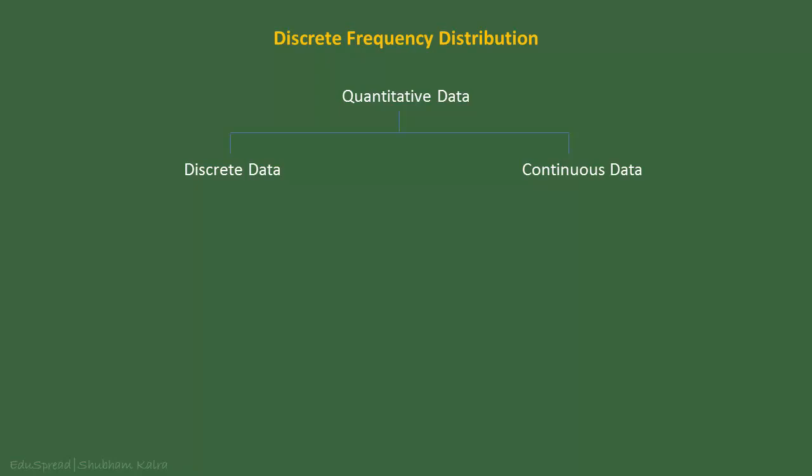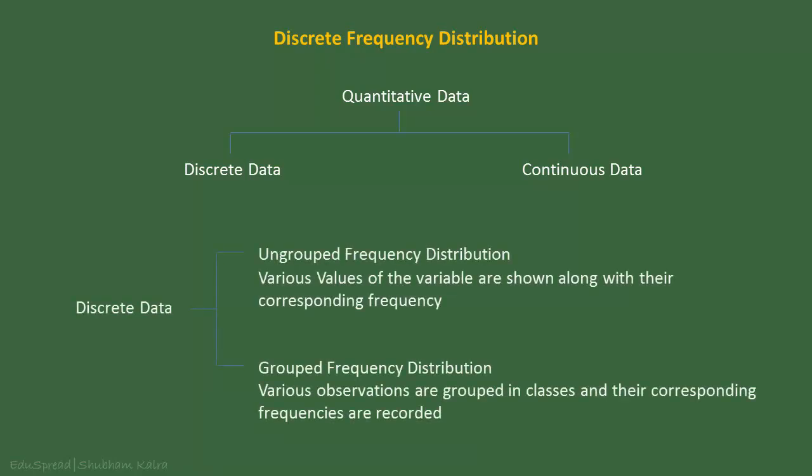As discussed earlier, quantitative data can be of two types: discrete and continuous. In this lecture, we will talk about discrete data and we will see how we can use frequency distribution to present discrete data. There are two types of frequency distribution that we can use to present discrete data: ungrouped frequency distribution and grouped frequency distribution.